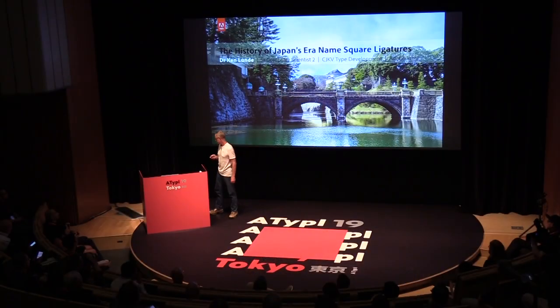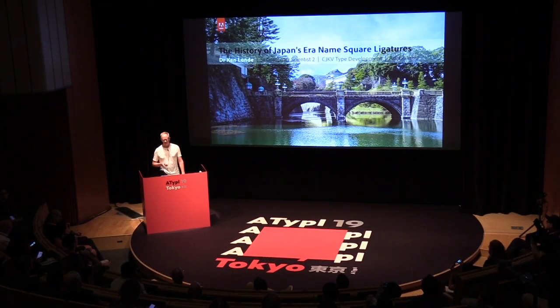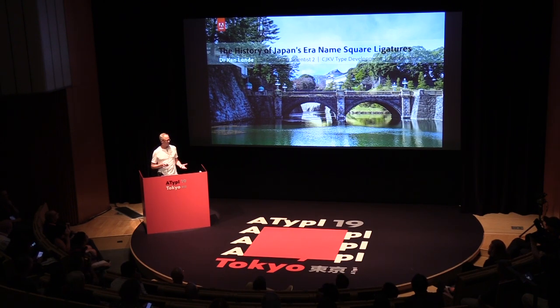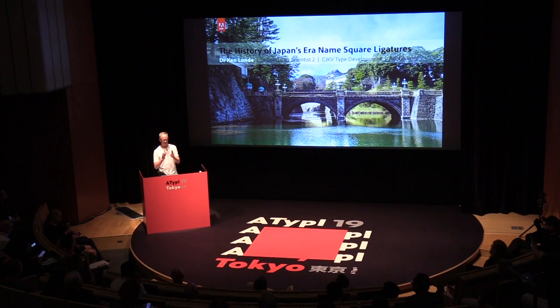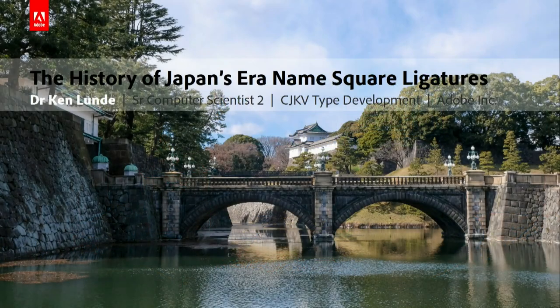This is an exciting time. Japan has a new era — as of May 1st, it's now the Reiwa era, and the last time this happened was 30 years ago. This affects standards, and our fonts are built on standards. Unicode is important. But there's a lot of history here about these so-called square ligature forms of the era name. The preferred way to express the era names is as two separate kanji, but we also have these smaller, compressed, side-by-side two-kanji square ligatures.